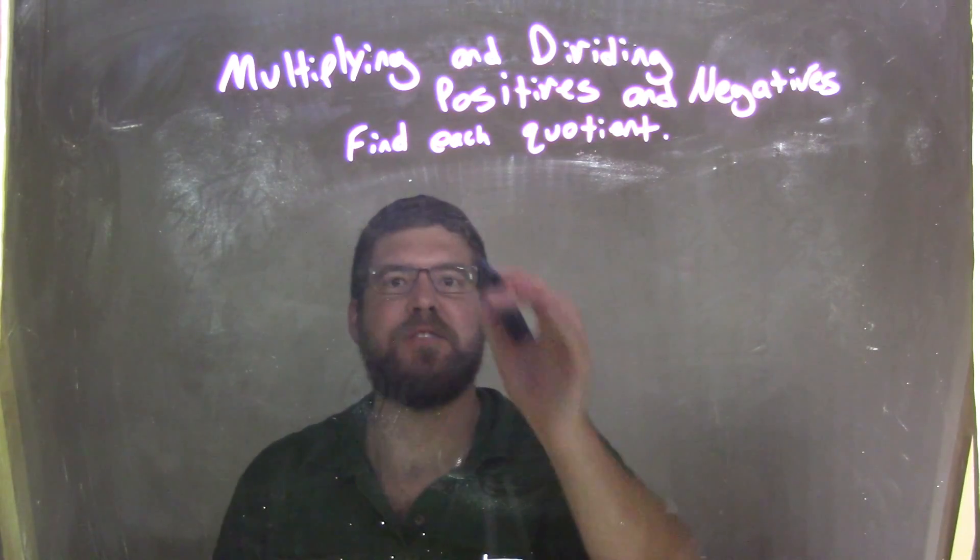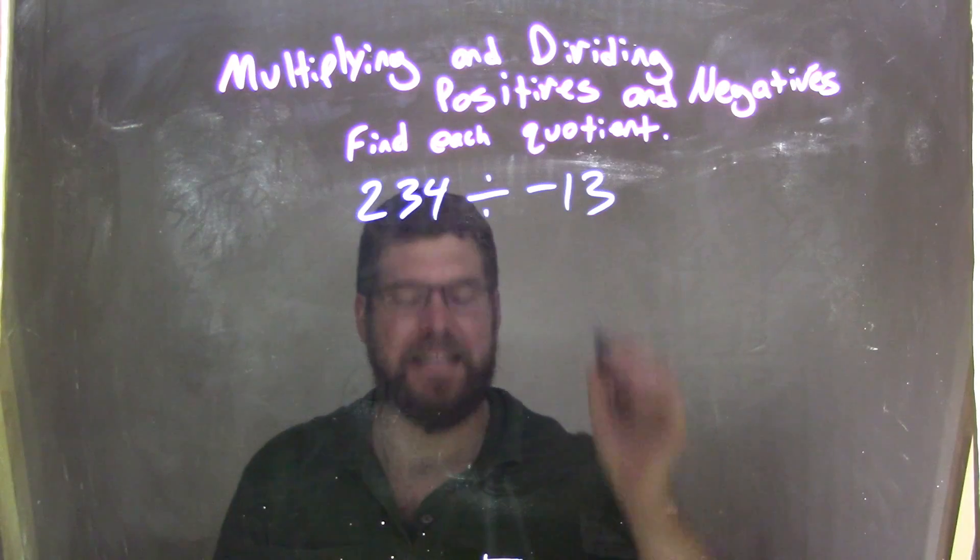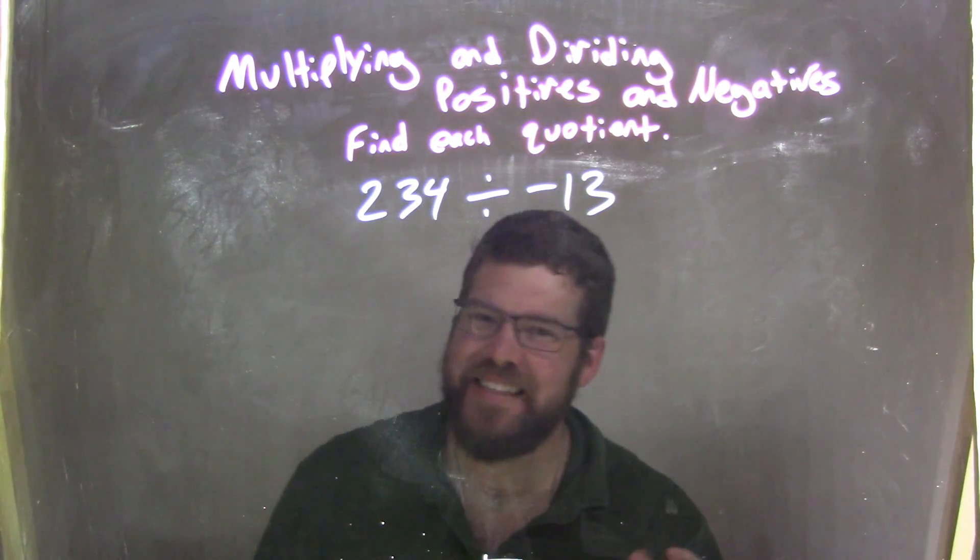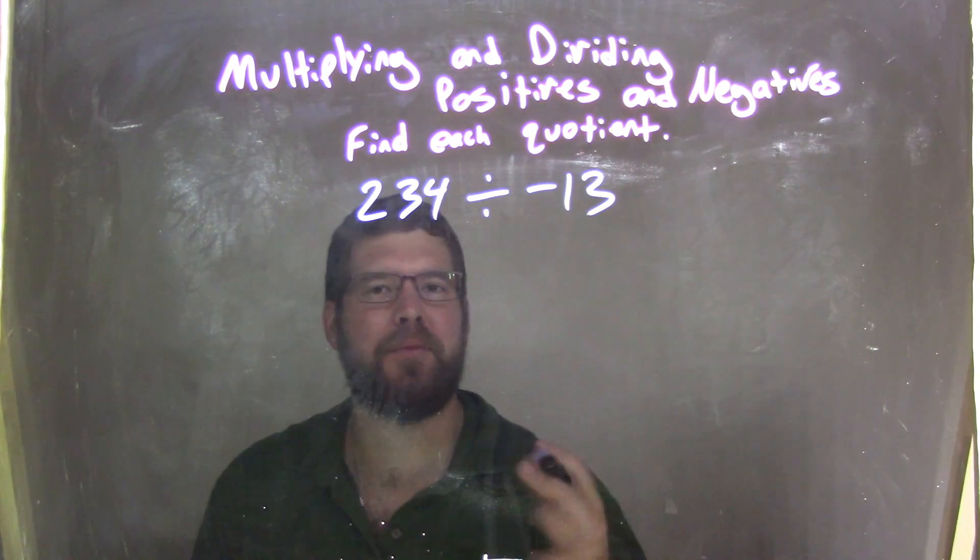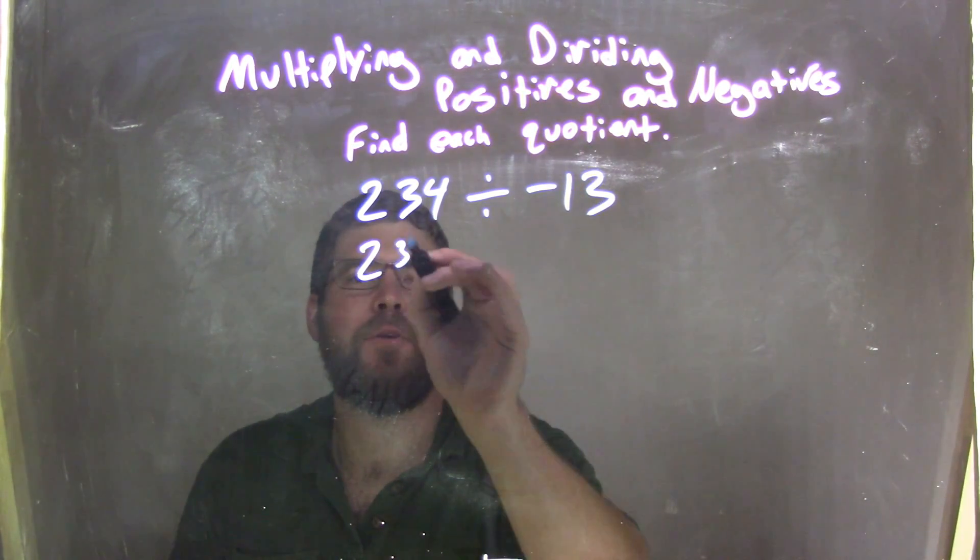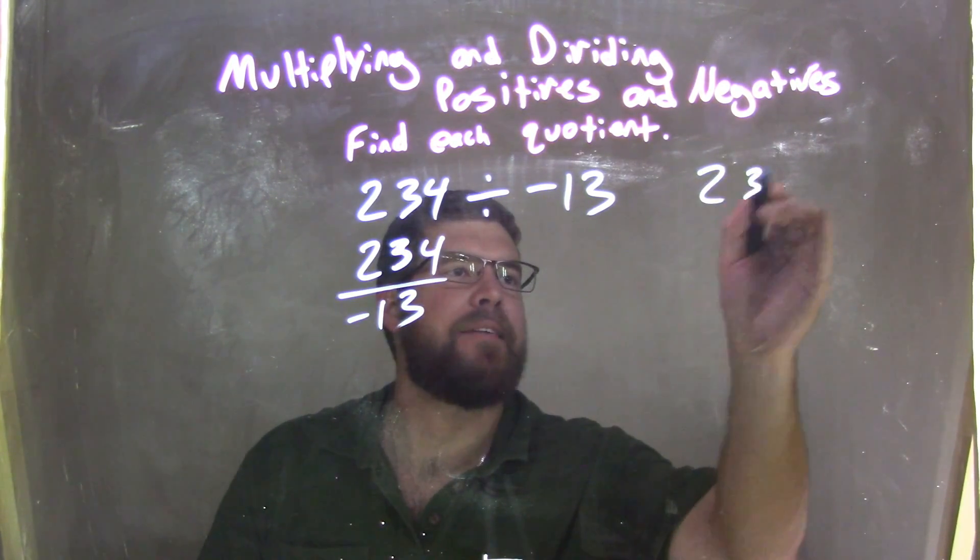So if I was given this quotient, 234 divided by negative 13, this one's tricky because 13's always, they're my favorite, those prime numbers are hard for me to divide by. Well, I like to write it as a fraction, so 234 over negative 13. So 234, I want to break down.